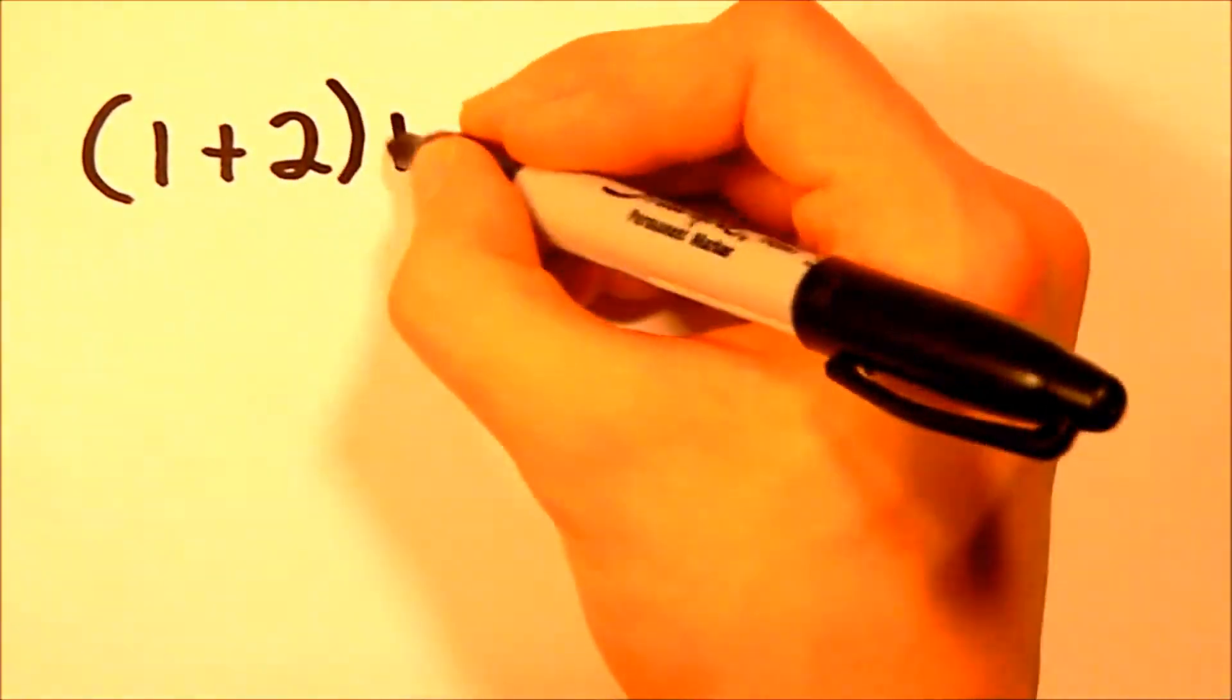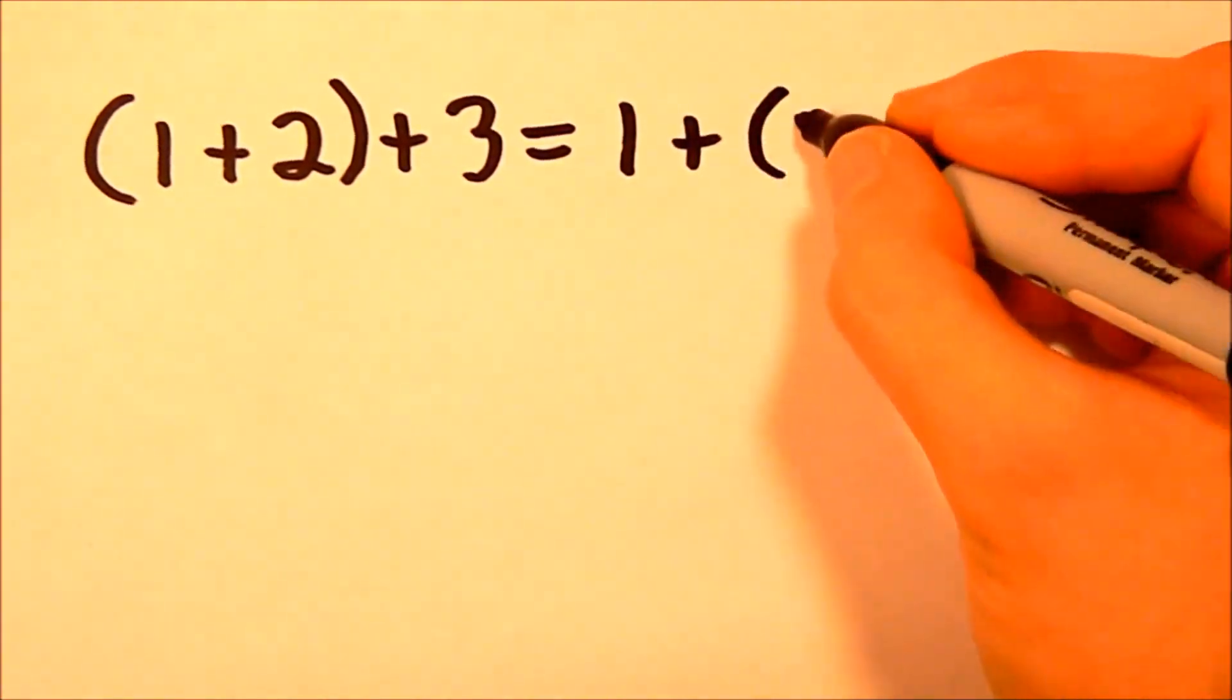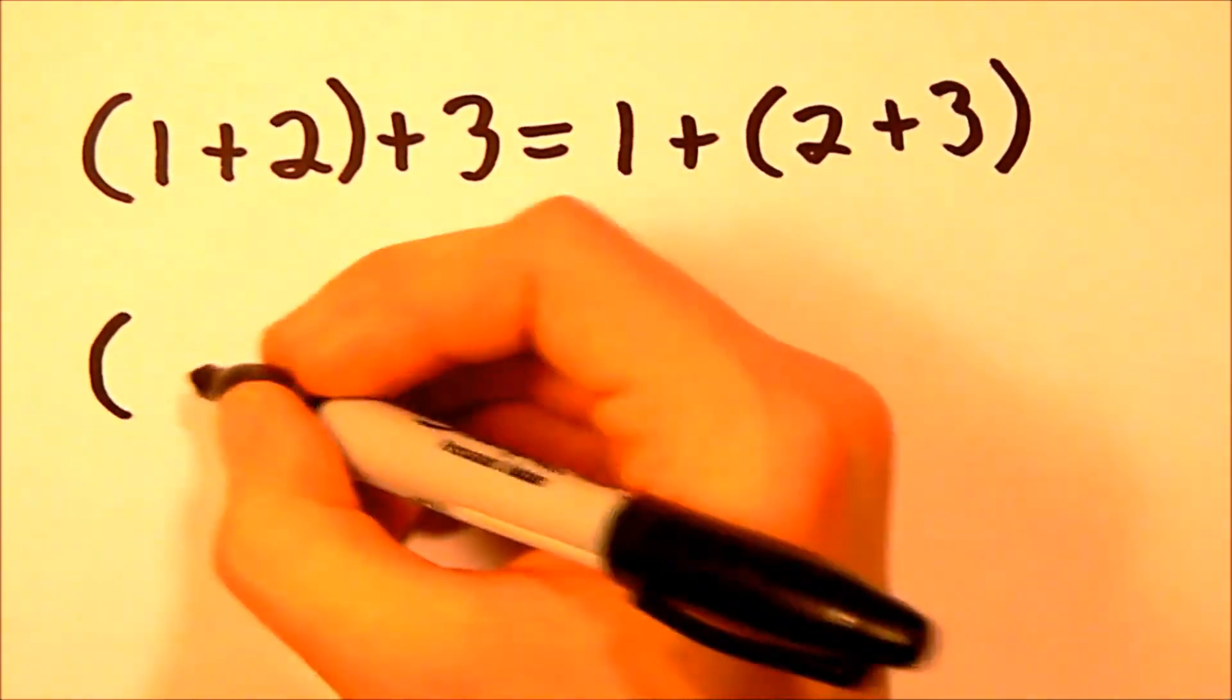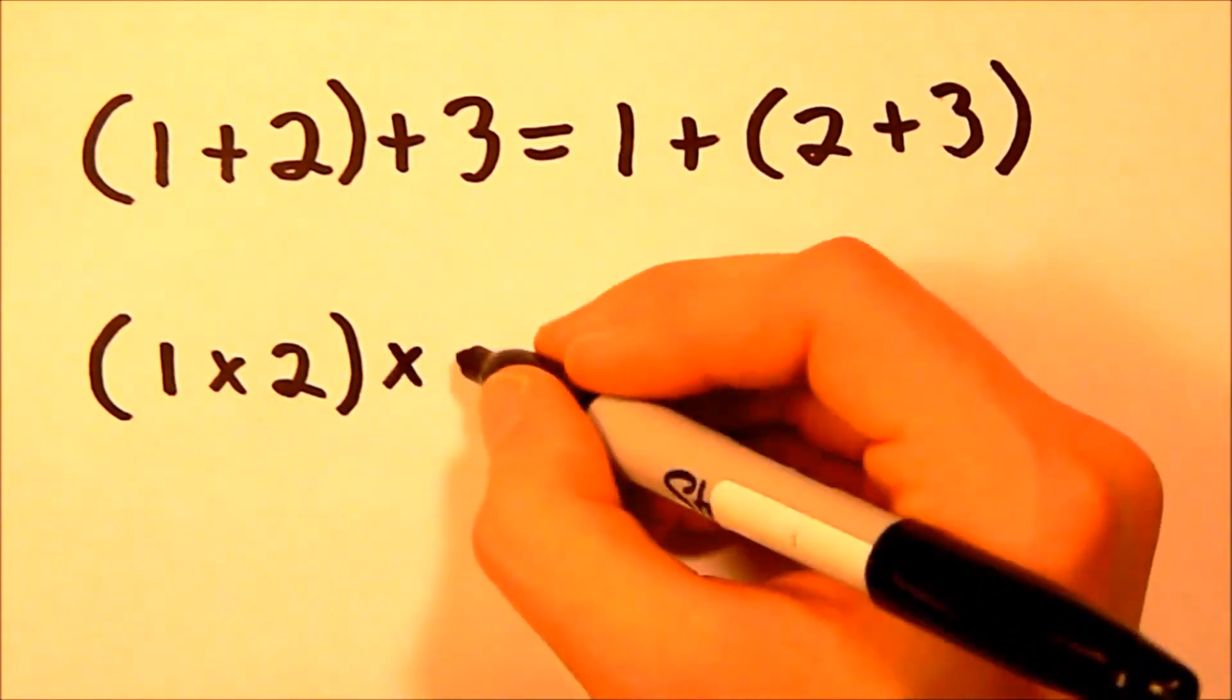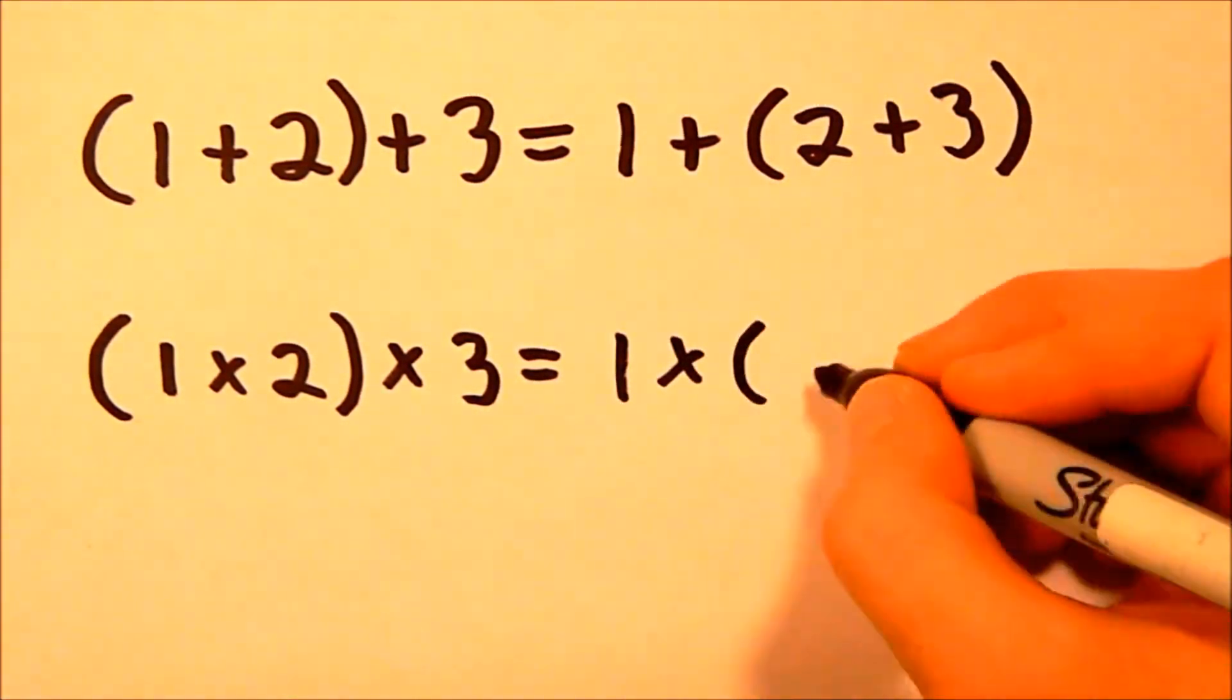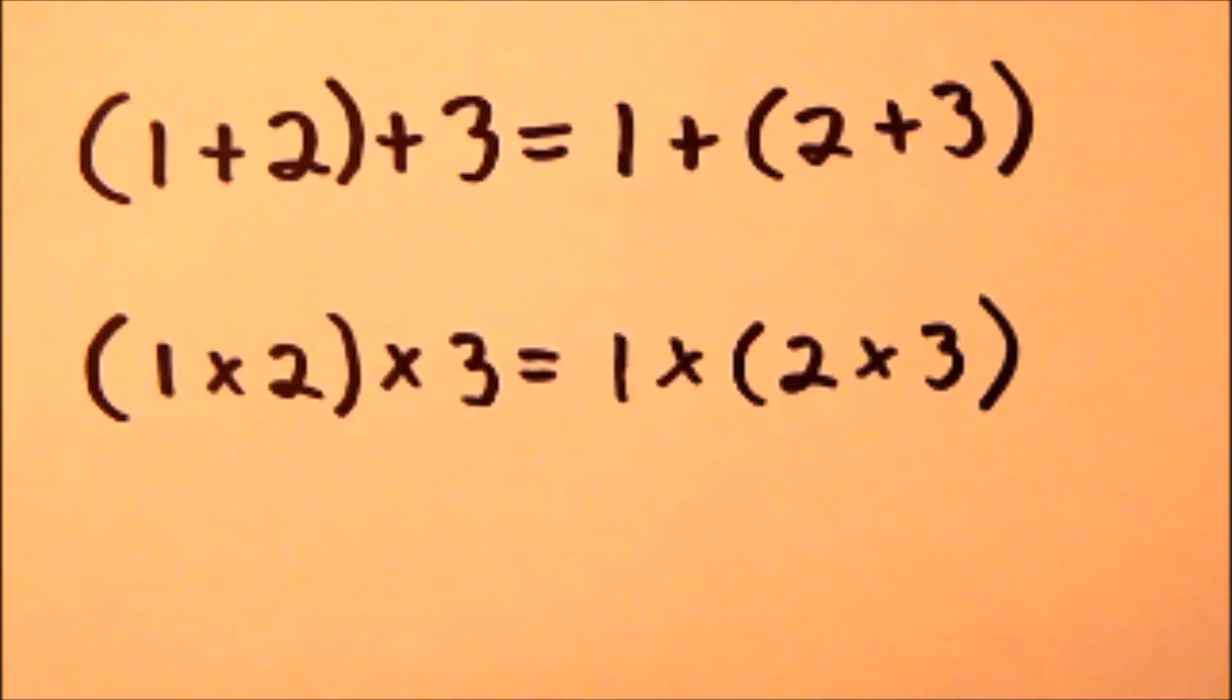So, the quantity of 1 plus 2 plus 3 equals 1 plus the quantity of 2 plus 3, and the quantity of 1 times 2 times 3 equals 1 times the quantity of 2 times 3.